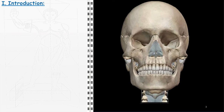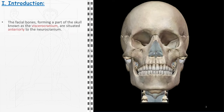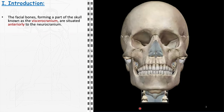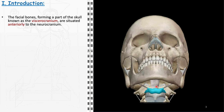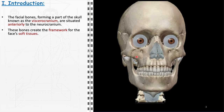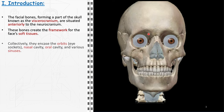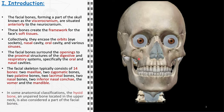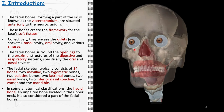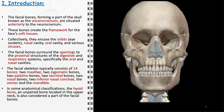The facial bones, integral components of the skull collectively termed the viscerocranium, are positioned anteriorly to the neurocranium. This group of bones serves as the structural foundation for the soft tissues of the face, playing a crucial role in defining facial aesthetics and expression. They encompass and protect several vital anatomical features, including the orbits, the nasal cavity, the oral cavity, and various sinuses. Additionally, the facial bones surround the openings to the proximal structures of the digestive and respiratory systems, specifically the oral and nasal cavities.